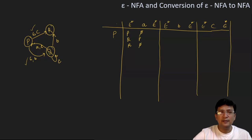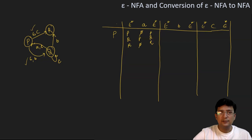So for phi, it is undefined. Epsilon closure for p will be {p, q, r}, we already computed that. So p on getting symbol a moves to {p, q, r} — all states. Similarly, the transition with b.